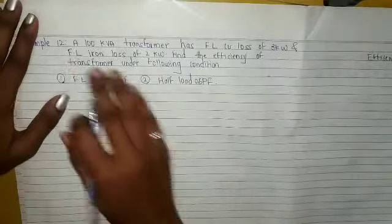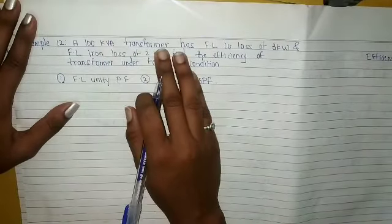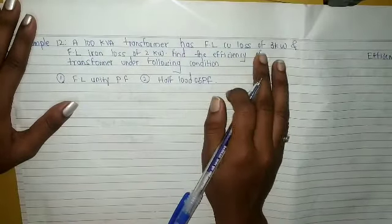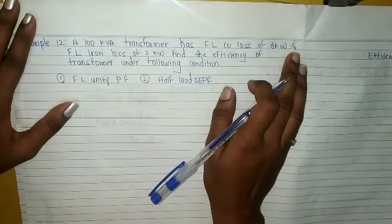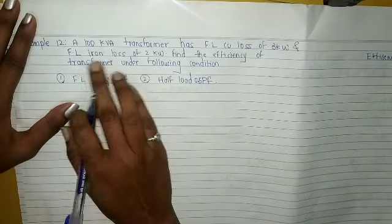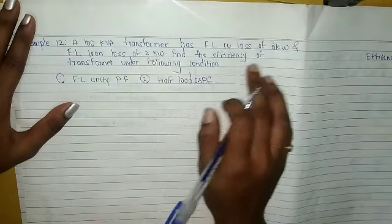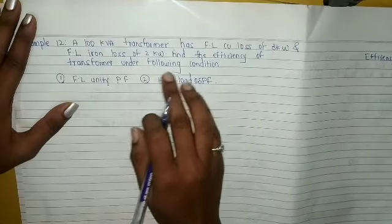A 100 kVA transformer has a full load copper loss of 3 kW and full load iron loss of 2 kW. Find the efficiency of the transformer under the following conditions.